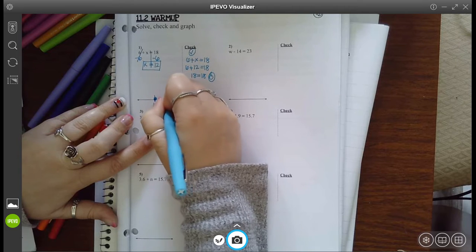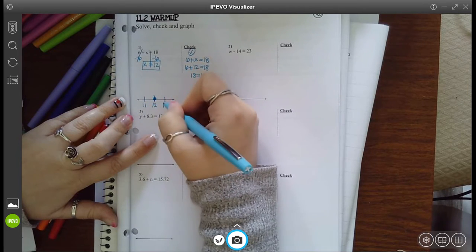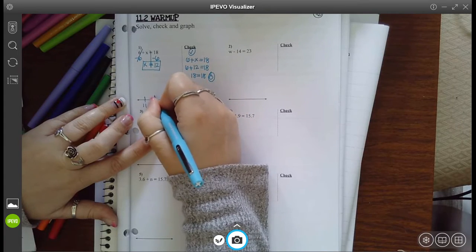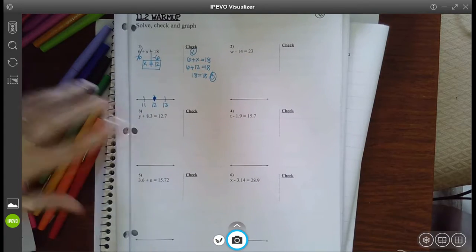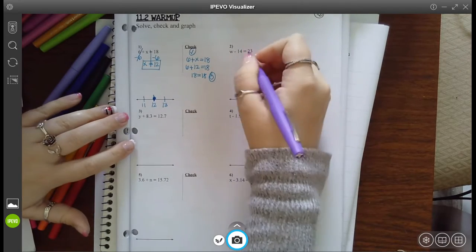And when you graph it, you just draw a number line with your answer in the middle, one number smaller, one number bigger, and draw a dot at your particular answer. Okay, for your next one, go ahead and draw a line down from your equal sign.